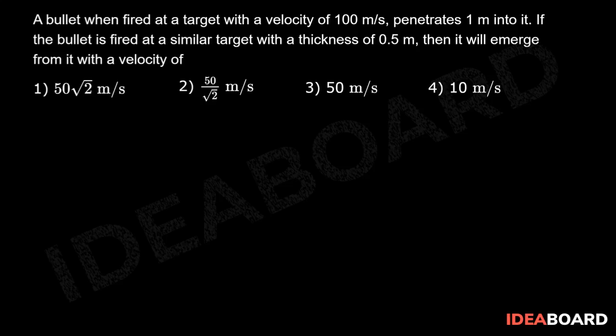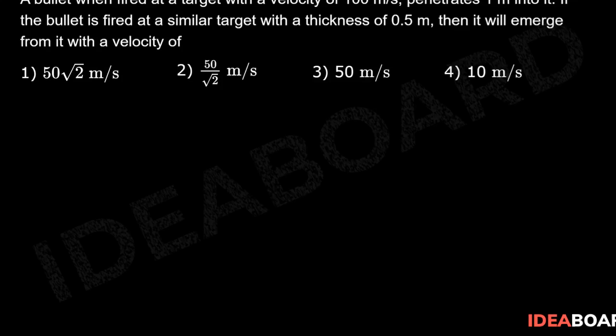A bullet when fired at a target with a velocity of 100 meter per second penetrates one meter into it. If the bullet is fired at a similar target with a thickness of 0.5 meter, then it will emerge from it with a velocity of... So now let's analyze the case here.